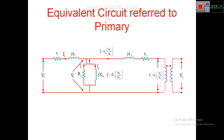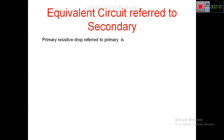All quantities have now come to the primary side and must be represented with dash notation: r2', jx2', i2', v2', and e2'. These dash components show how secondary quantities are referred to the primary side.